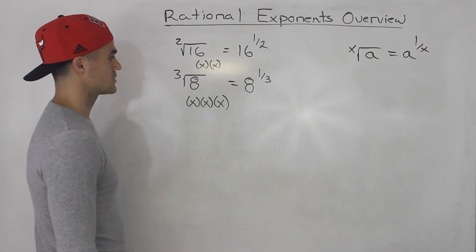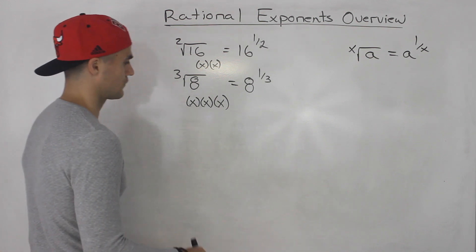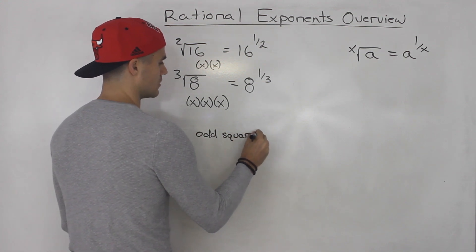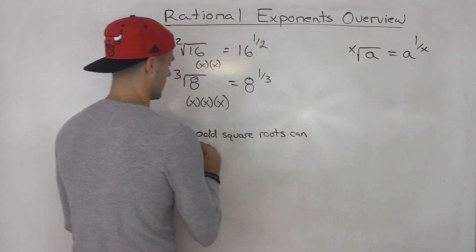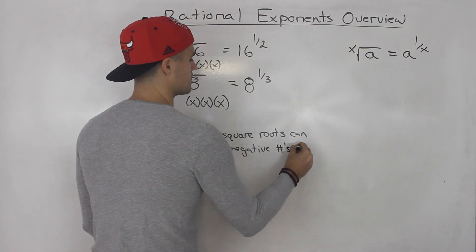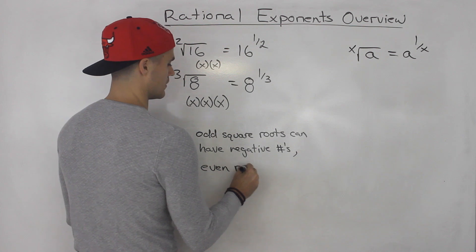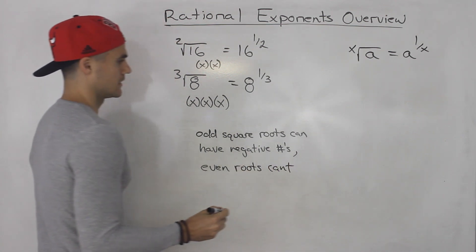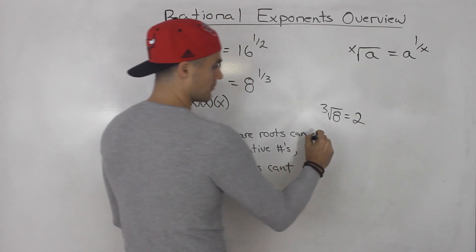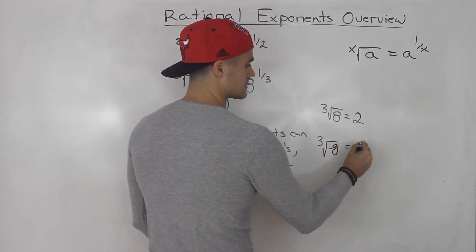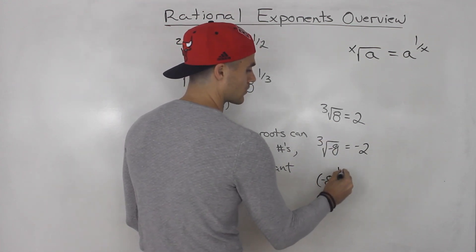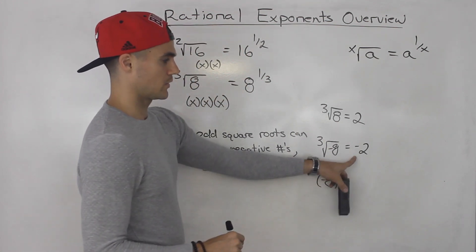A couple of things I want to note, more so as a review from previous grades. Odd roots can have negative numbers. For example, the third root of 8 is equal to 2, but the third root of negative 8 is negative 2 — it gives us an answer. If you take negative 8 to the power of 1 over 3, it would give us negative 2.